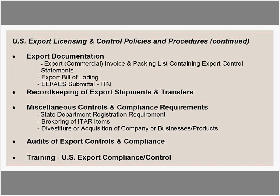On training: it's important to provide specific training to employees. Treat them as intelligent adults. Provide general information on U.S. export laws and regulations, including a general knowledge of controlled commodities and technologies. Then drill down to the elements of control embedded in your export licensing and control policies and procedures, explaining how each employee is expected to assist the company in meeting compliance with U.S. export laws and regulations in their specific functional role.